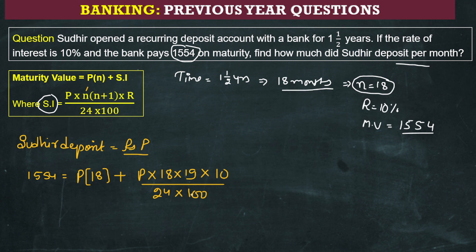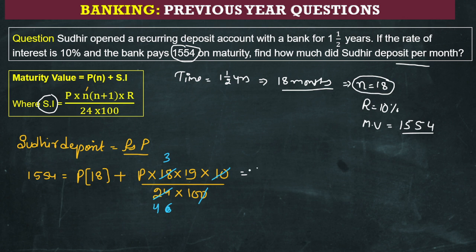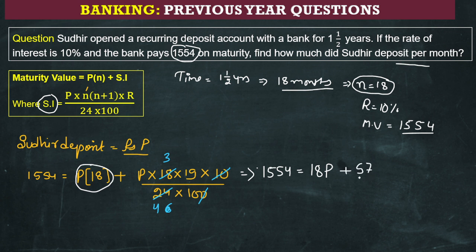Now the calculation begins. From 10 and 100, we get 10 in the denominator. Then 10 and 24 are both divisible by 6 — after cancellation, 24 becomes 4. So the equation converts to: 1554 equals 18P plus 3 into 19P, which gives 57P, divided by 40.